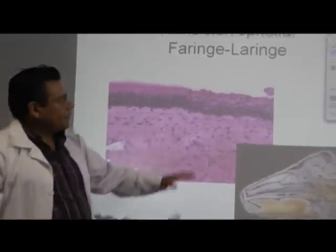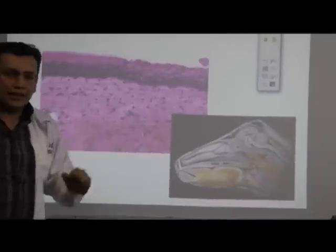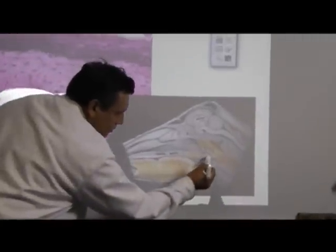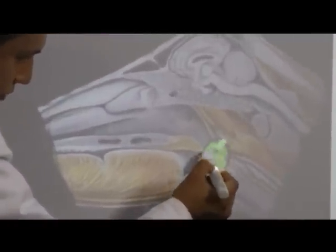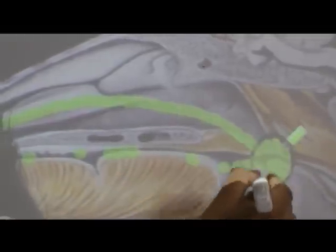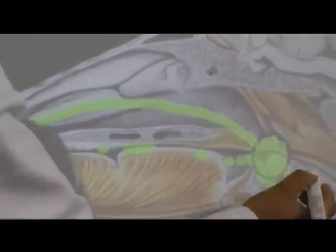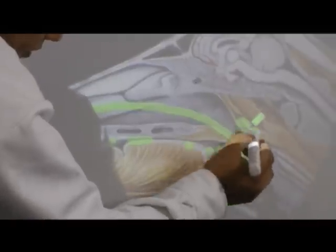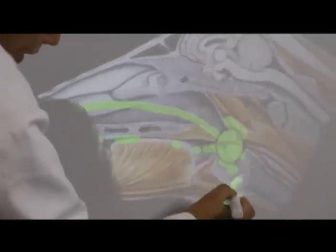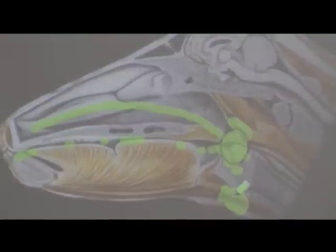Como parte de la inmunidad adaptativa, estoy señalando la localización de esa transición entre la cavidad nasal y la cavidad oral, justamente la faringe y la laringe. Nuevamente existirá el linfonodo regional retromandibular y retrofaríngeo como parte de esa inmunidad adaptativa.